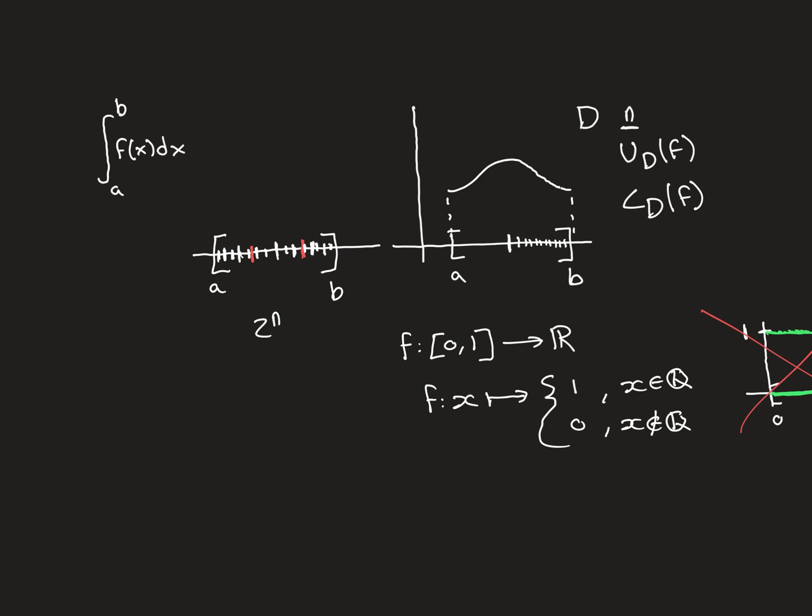So the way we're going to define a function being Riemann integrable is if the upper Riemann sums and the lower Riemann sums converge on one another — get indefinitely close to one another. And if they meet somewhere, if they're converging on the same thing from those two sides, then that's going to be the value of the area. So let me write down this definition.